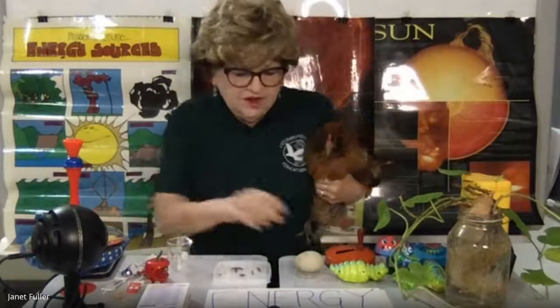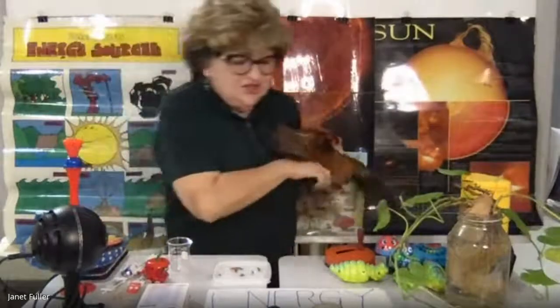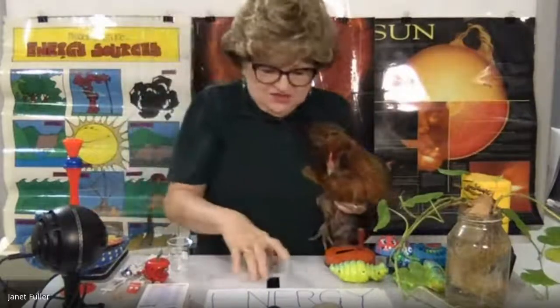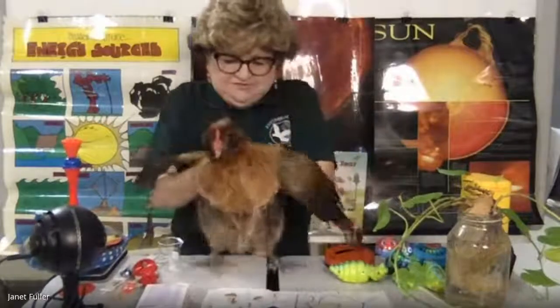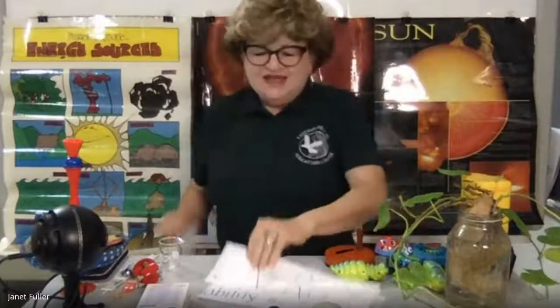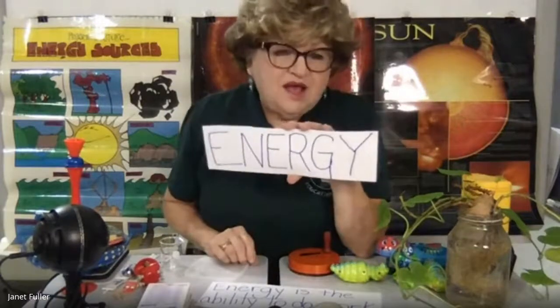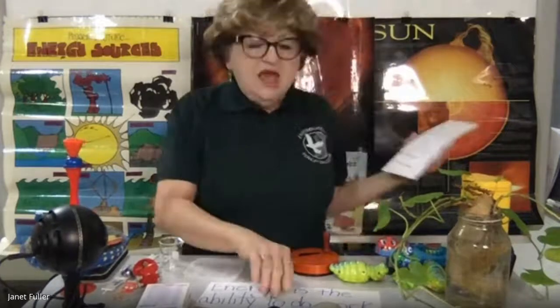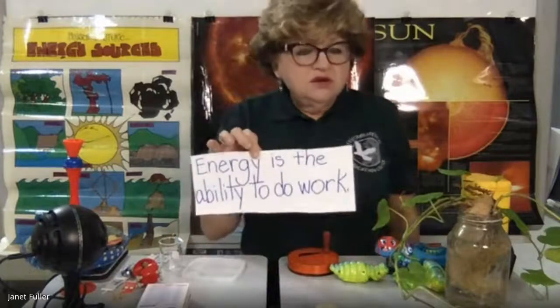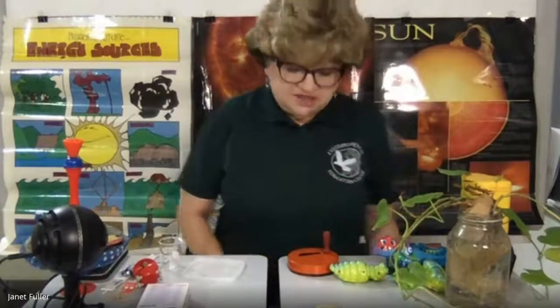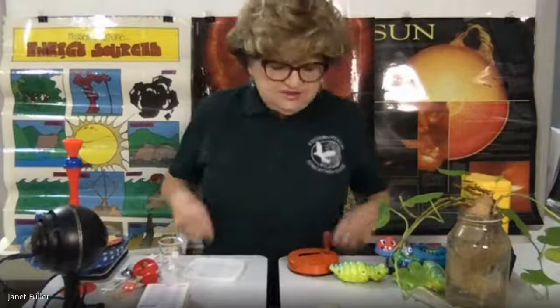We're going to see if she'll eat the worms for us. Today in this section we're going to talk about energy — specifically different forms of energy. Energy is the ability to do work. Lauren's work as a hen is to make eggs and lay them, but she also runs and scratches in the dirt. For all of those things she needs energy, and she gets that energy from her food.